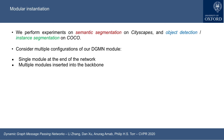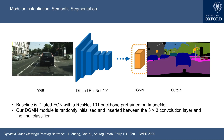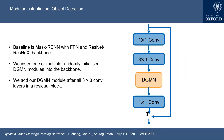We perform experiments on semantic segmentation on CityScape and object detection and instance segmentation on COCO. We consider multiple configurations of our module: a single module at the end of the network, and multiple modules inserted into the backbone. For the task of semantic segmentation on CityScape, our baseline is dilated FCN with the ResNet-101 backbone. We insert one or multiple randomly initialized DGMN modules into the backbone, adding our DGMN module after all 3×3 convolution layers in a residual block.